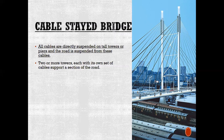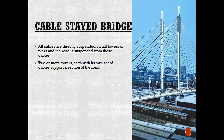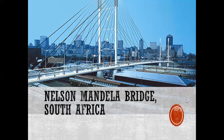Then you get a cable-stayed bridge — remember I said to remember the difference between the two cable-type bridges. In this one, all cables are directly suspended on tall towers or piers, and the road is suspended from these cables. That tower is directly connected to the road. Two or more towers, each with its own set of cables, support a section of the road. That is the Nelson Mandela Bridge in South Africa — it crosses over a lot of railways. You should go check it out when you're in Johannesburg.